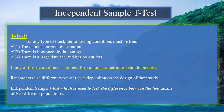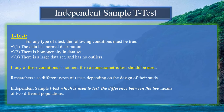Before discussing the independent sample t-test in detail, we need to know the conditions under which a parametric t-test is applied. Condition 1: the data has a normal distribution. Condition 2: there is homogeneity in the dataset. Condition 3: there is a large dataset with no outliers. If any of these conditions are true, we use the parametric test; otherwise we use the non-parametric t-test, which will be covered in coming lectures.